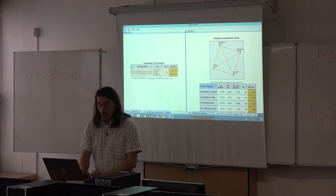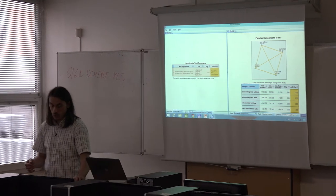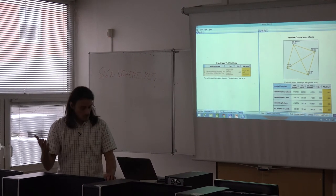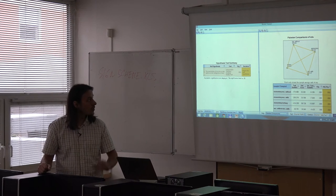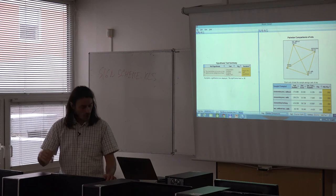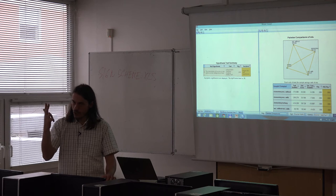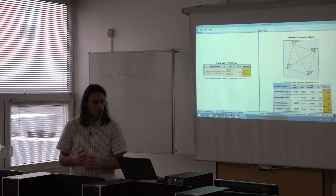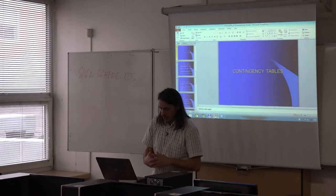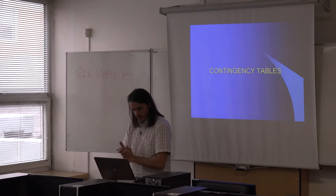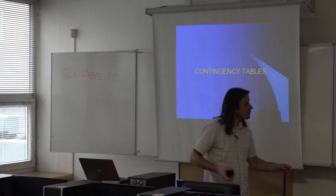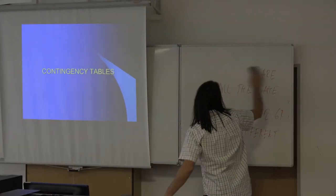For homework, try to compute a Kruskal-Wallis test on your own data. Find one cardinal or ordinal variable and one variable that divides your data into at least three groups, then try to find differences in medians. Now we will switch to a new topic: contingency tables. What does the expression contingency tables mean?